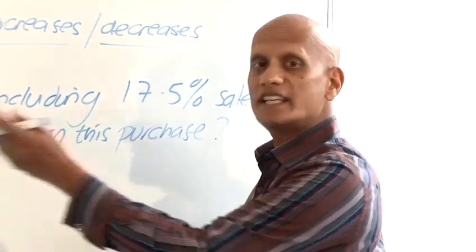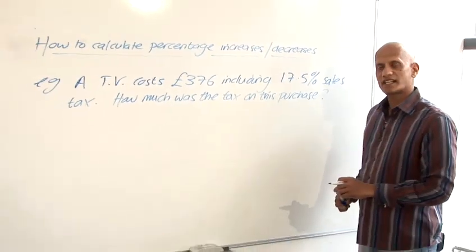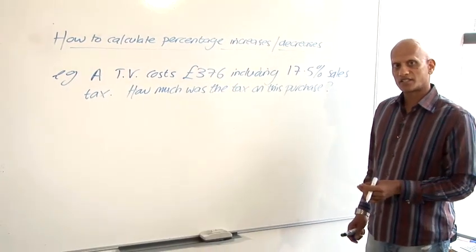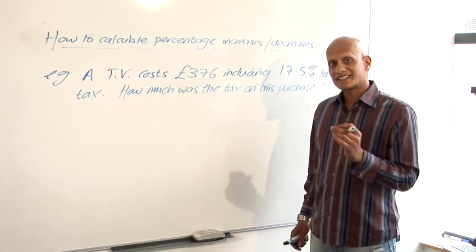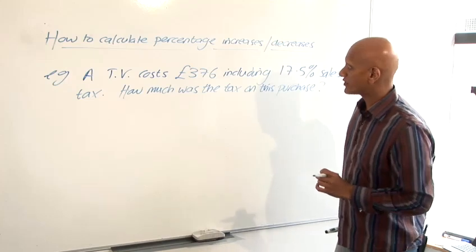Our next example, a TV costs 376 pounds including 17.5% sales tax. We want to know how much was the sales tax on that purchase? This is a much more difficult question but because we're going to use exactly the same method we're not going to find it that much more difficult as long as you assign the numbers correctly.